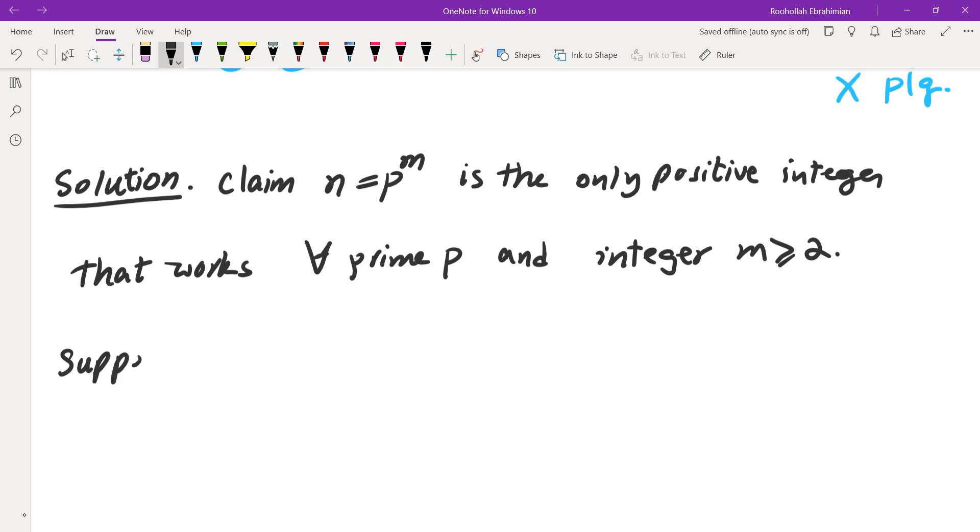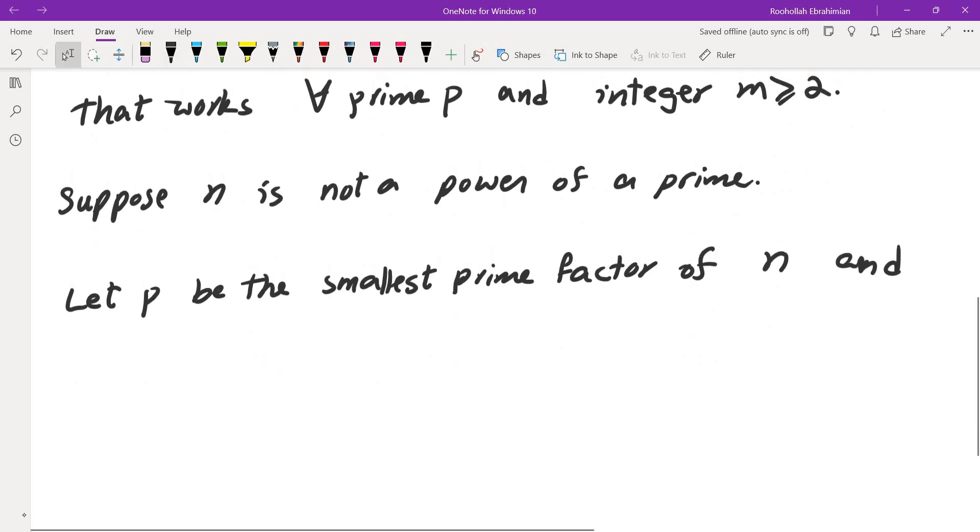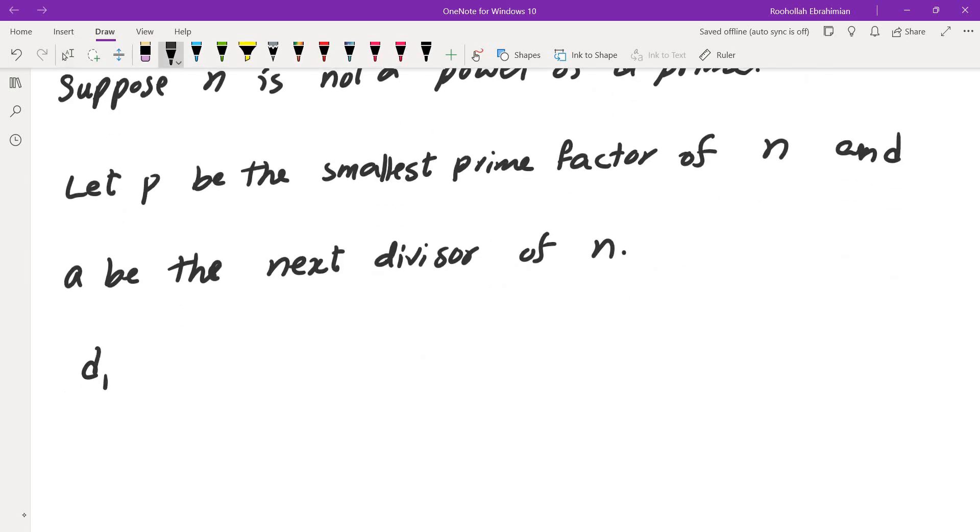Suppose n is not a power of a prime. I am going to take the smallest prime factor of n and call that p. So let p be the smallest prime factor of n and maybe a be the next divisor. In other words, d₁ is 1, d₂ is p, and d₃ is a.